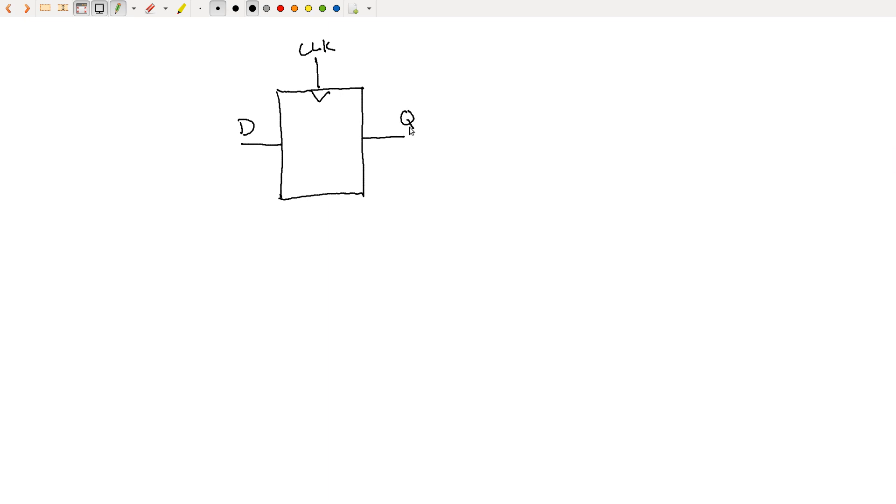Okay, and its behavior is that D is copied to Q when the clock signal goes from low to high. So if the clock signal is going along and then goes from 0 to 1, low to high, at the instant of this edge, then here we have D gets copied to Q on that edge.